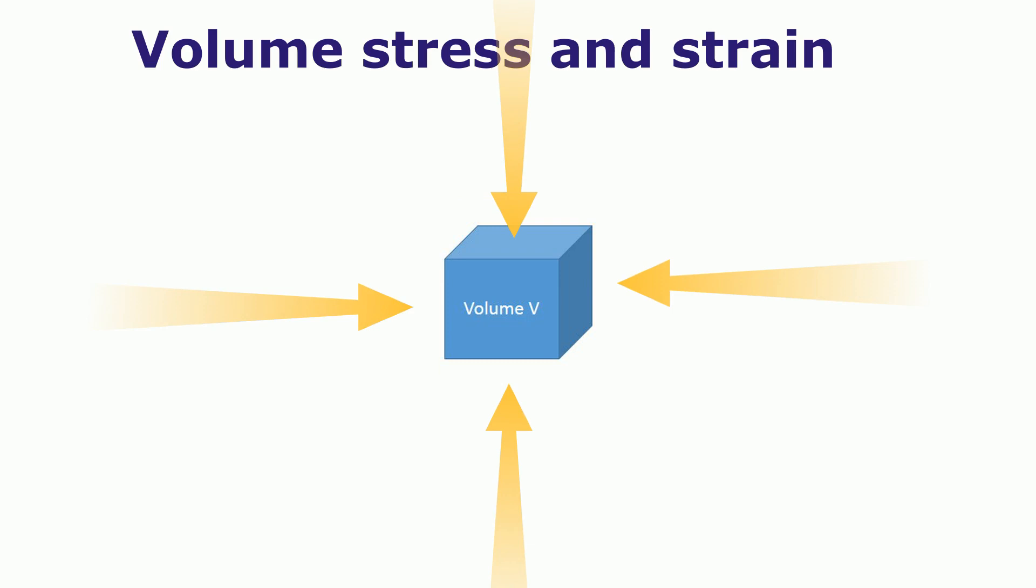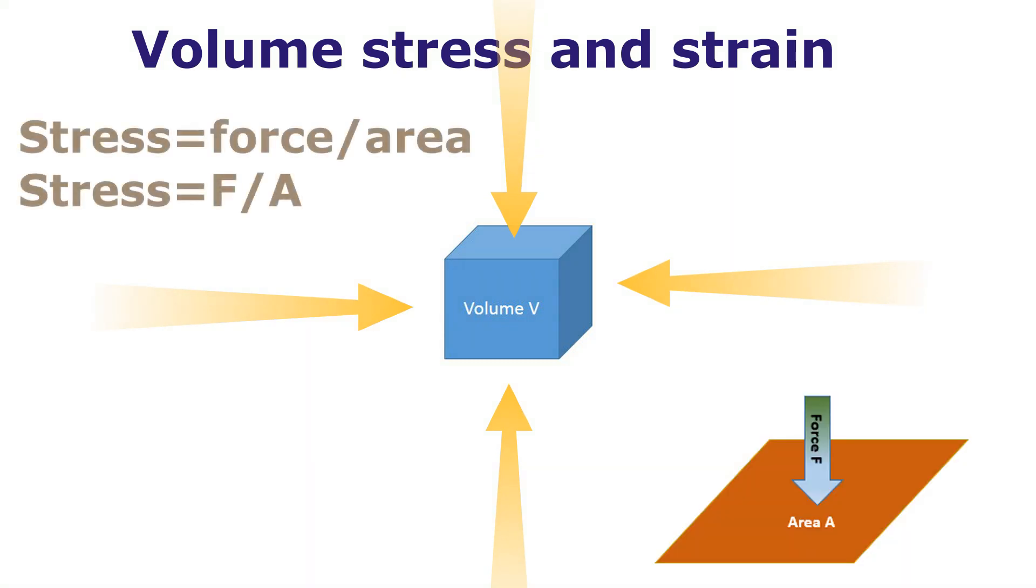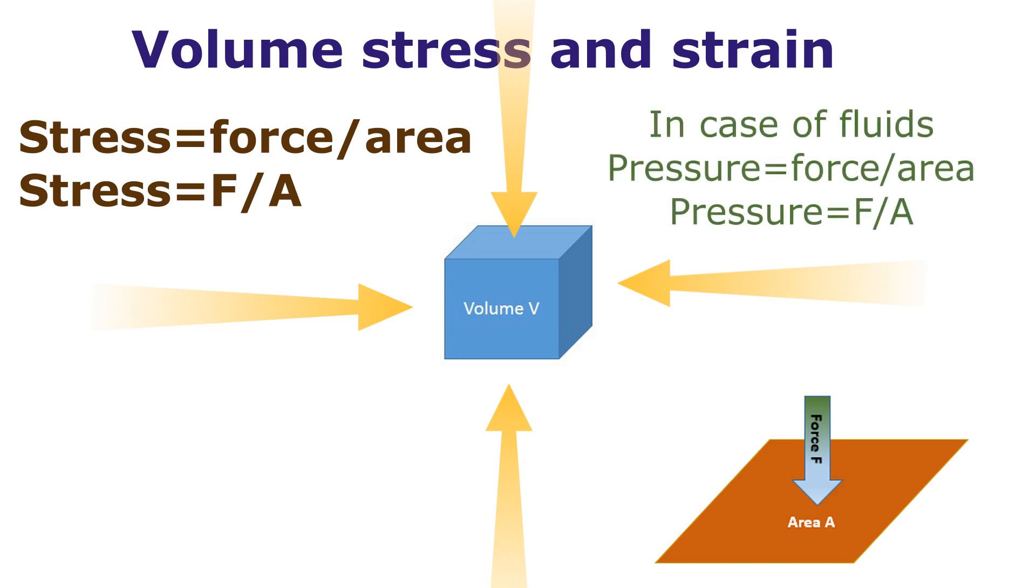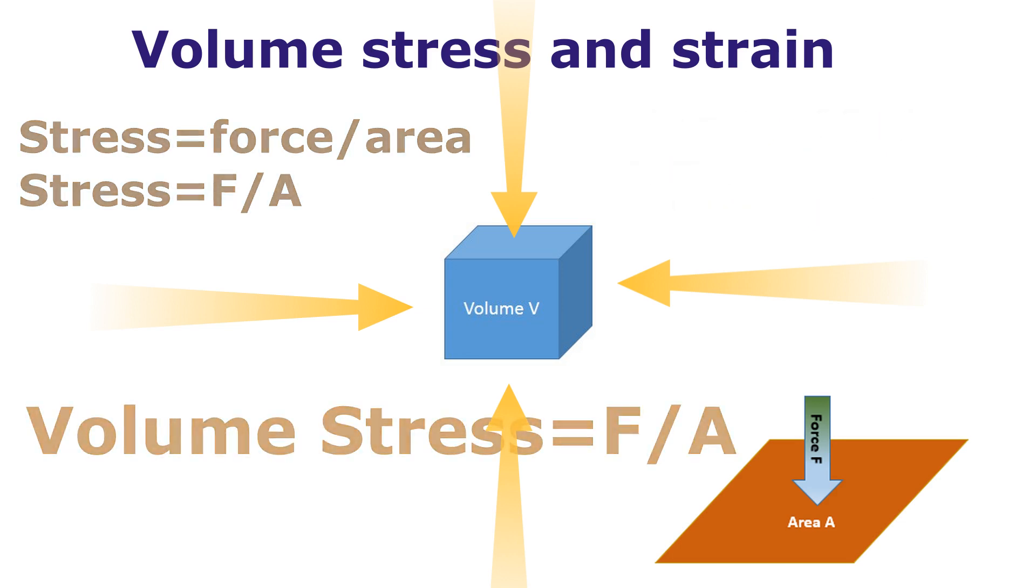The forces are distributed uniformly on all surfaces. This process of applying forces to the box which act on certain areas is known as stress. The volume stress in this case is equal to force per unit area. In the case of liquids, this is also force per unit area and is known as pressure. So volume stress is F/A.